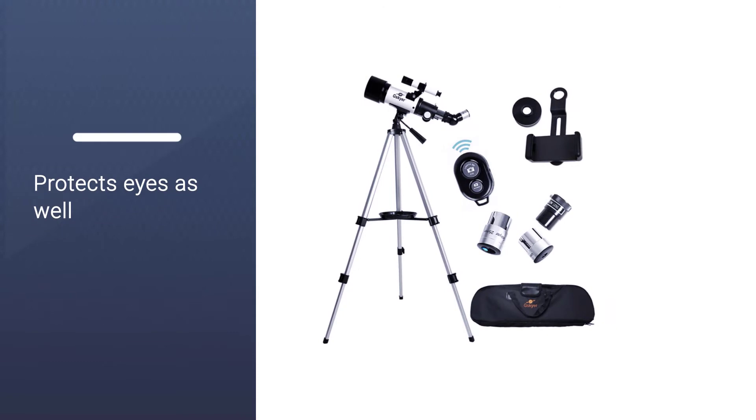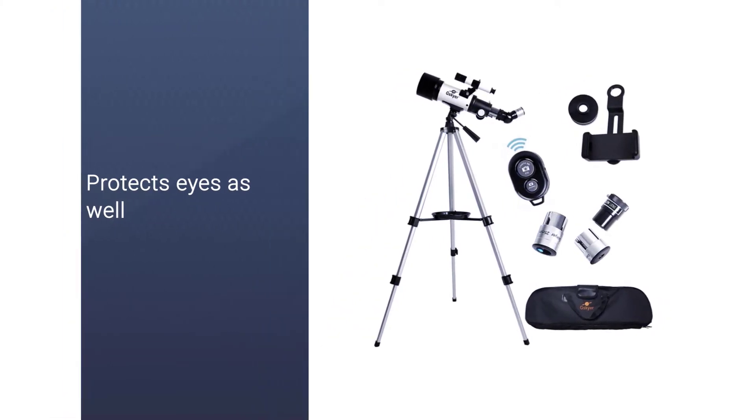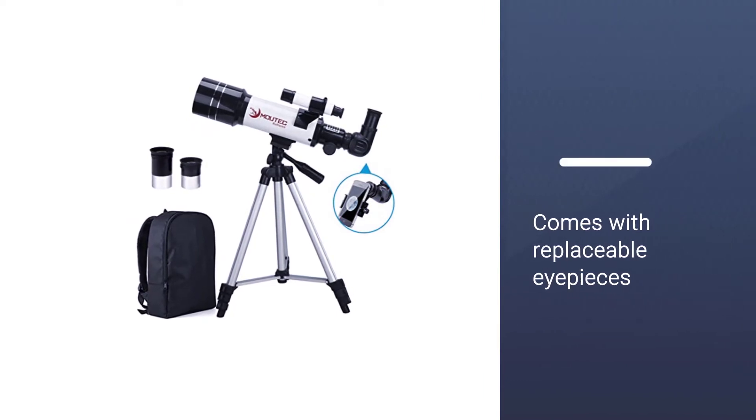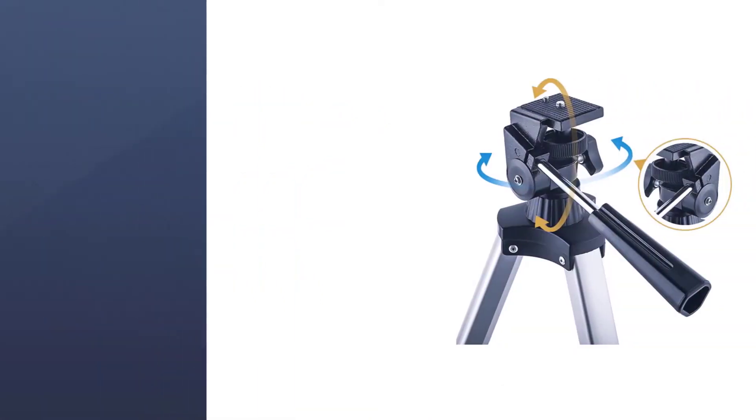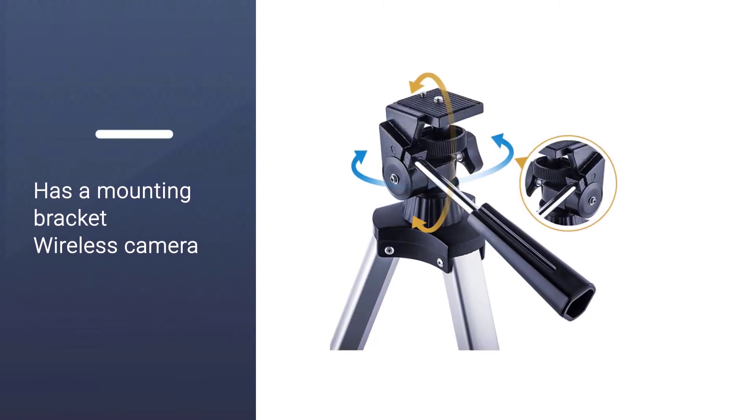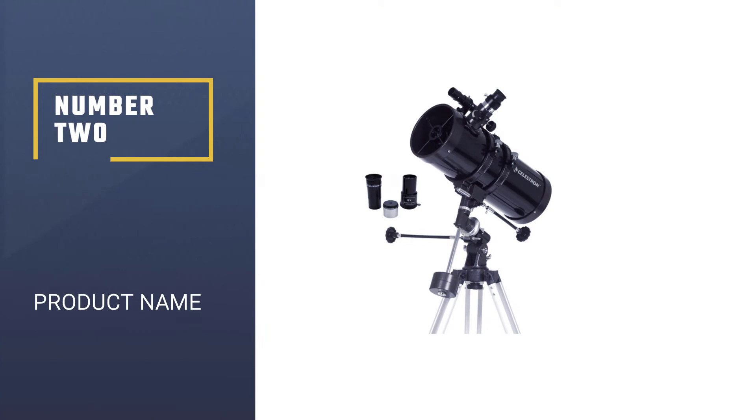Moreover, it protects your eyes as well. Additionally, the telescope comes with replaceable eyepieces and a Barlow lens. The telescope has a mounting bracket and crosshair lines inside the glass that helps in locating the planets quickly.